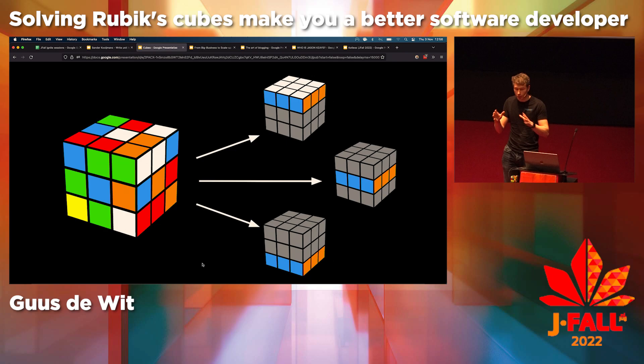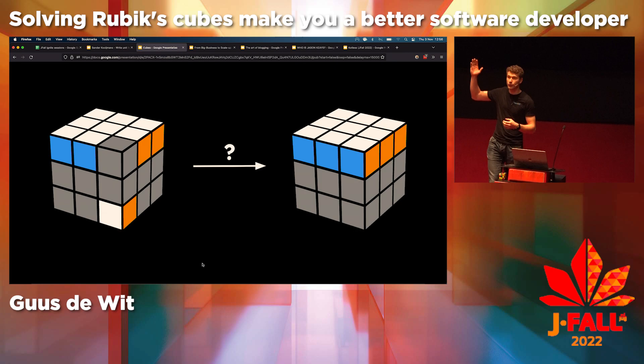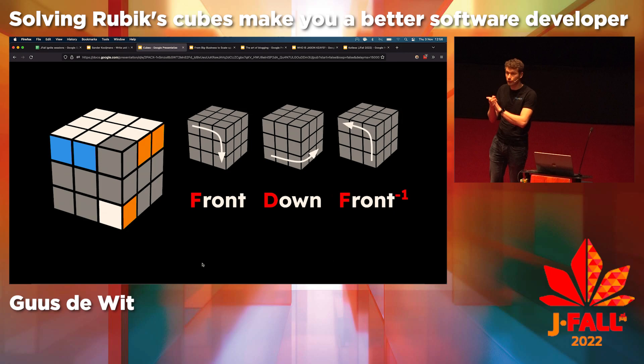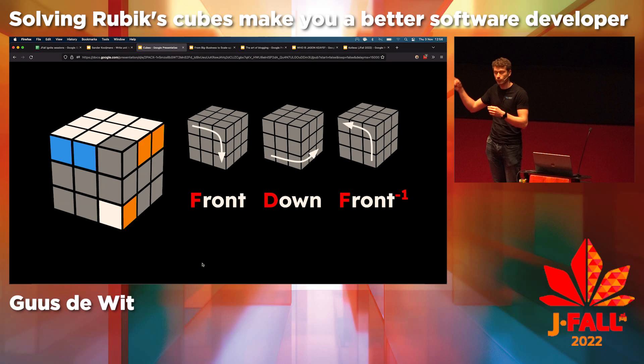In cubing, I want to zoom in on one of these sub-problems — putting a small piece into the top. In software development, we use code; in cubing, we use something called an algorithm. An algorithm is a sequence of moves that does something you want — in this case, turn the front side, then the downside, then the front side back. That will specifically solve this case and put the small piece to the top.